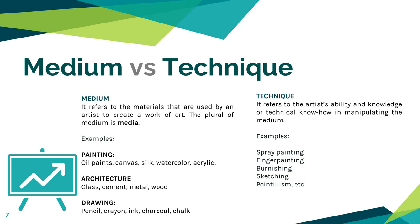For example, in painting the media include oil paints, canvas, silk, watercolor, and acrylic. In architecture, we have glass, cement, metal, and wood. And then in drawing, we have pencil, crayon, ink, charcoal, and chalk.